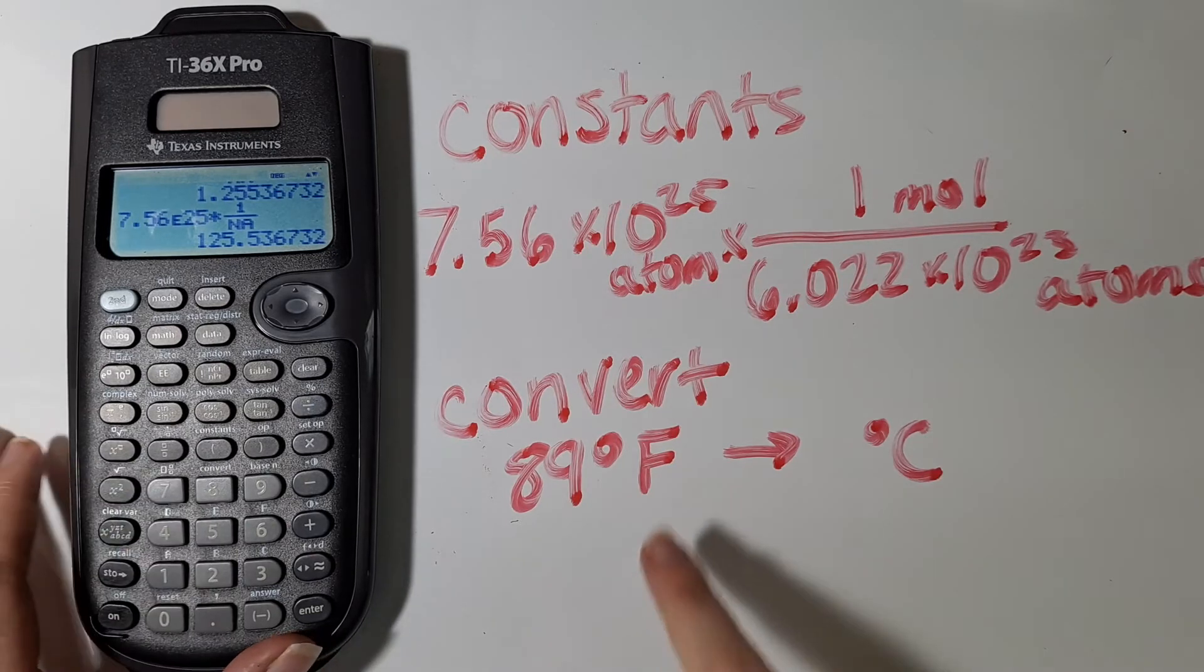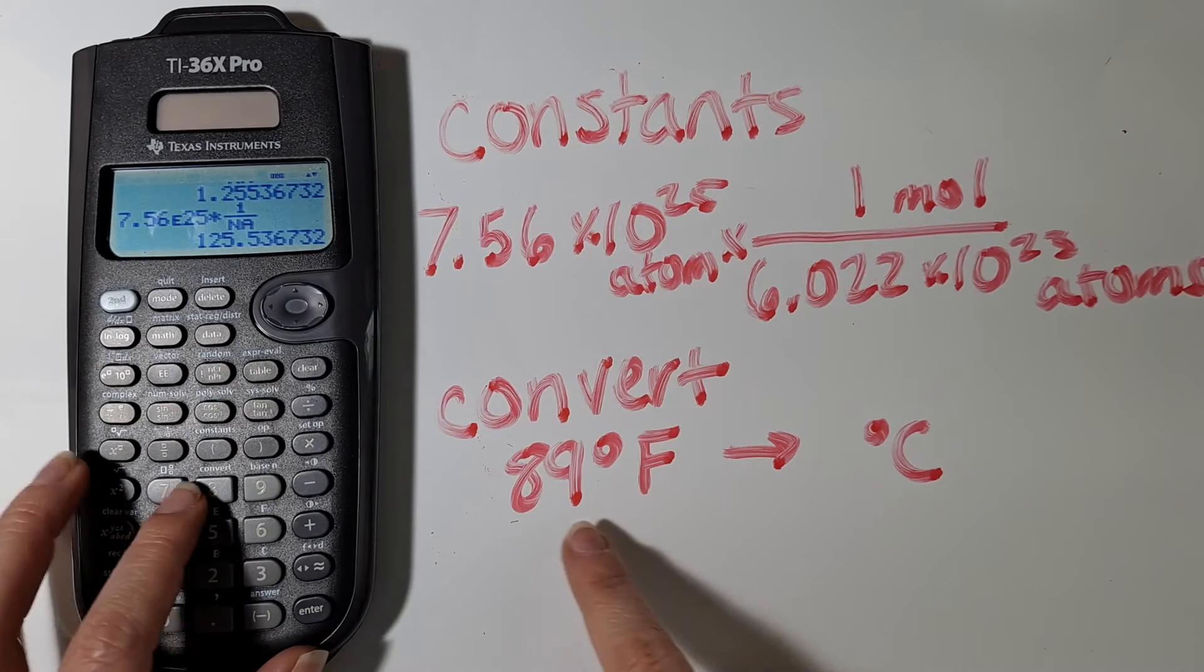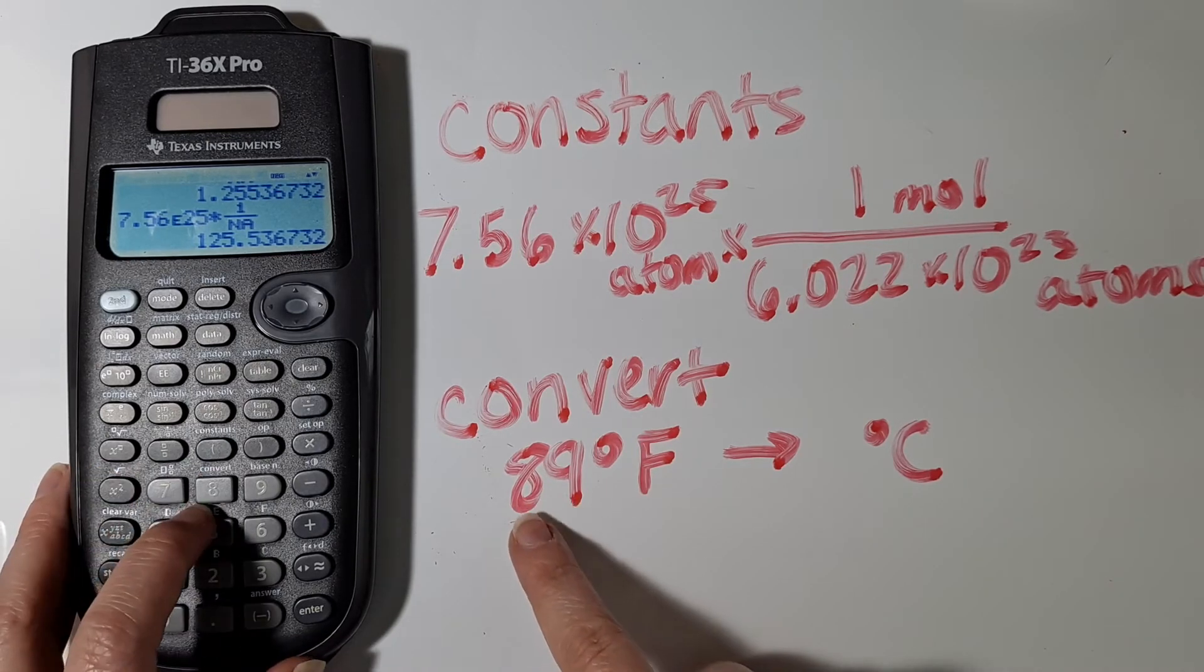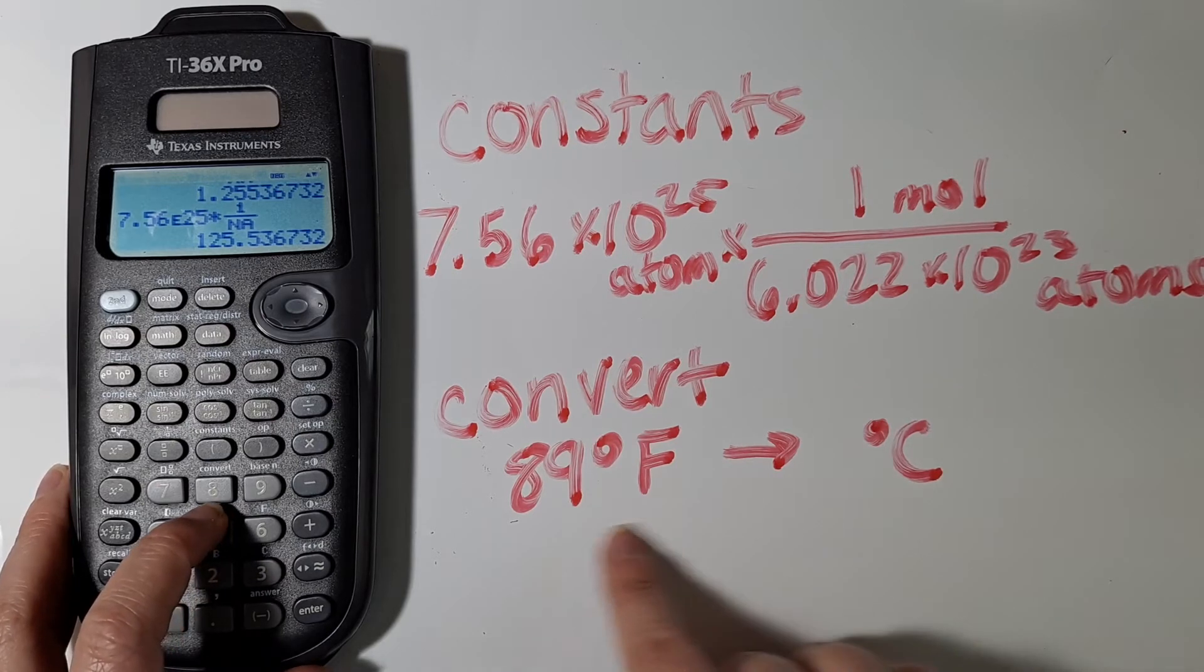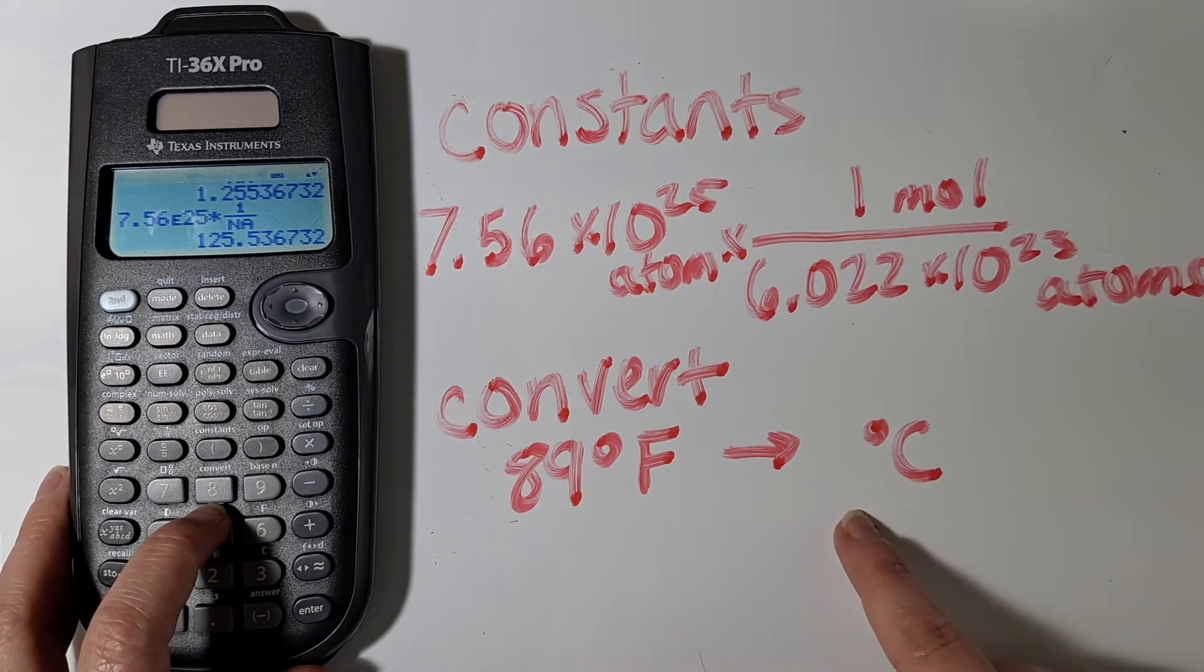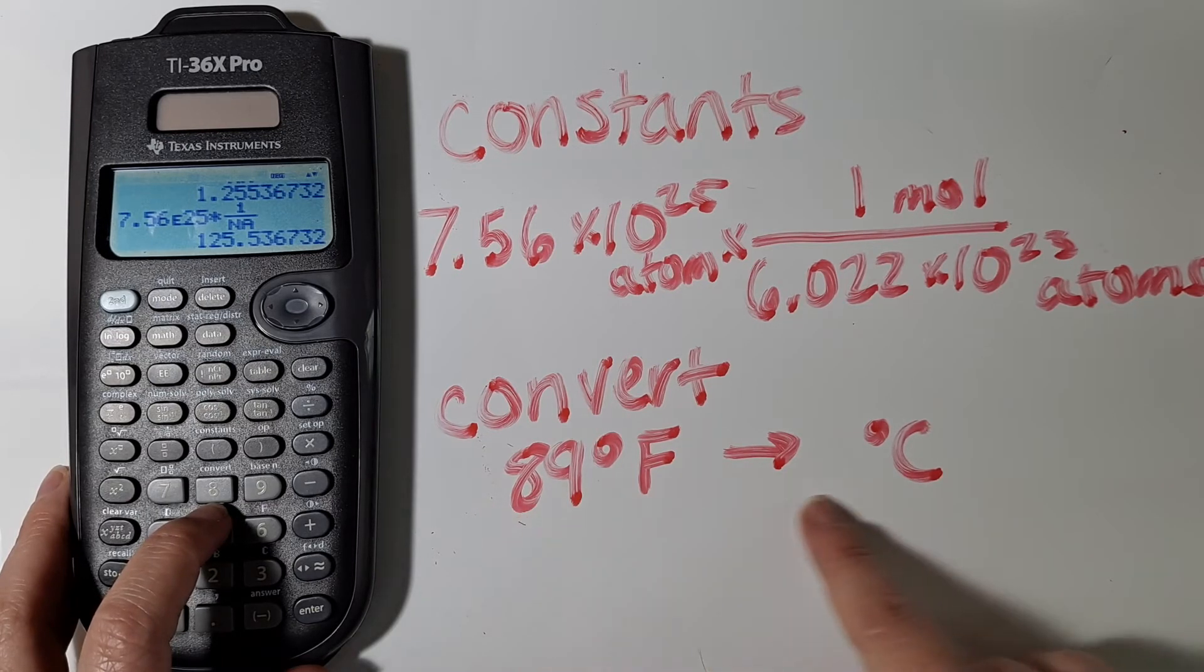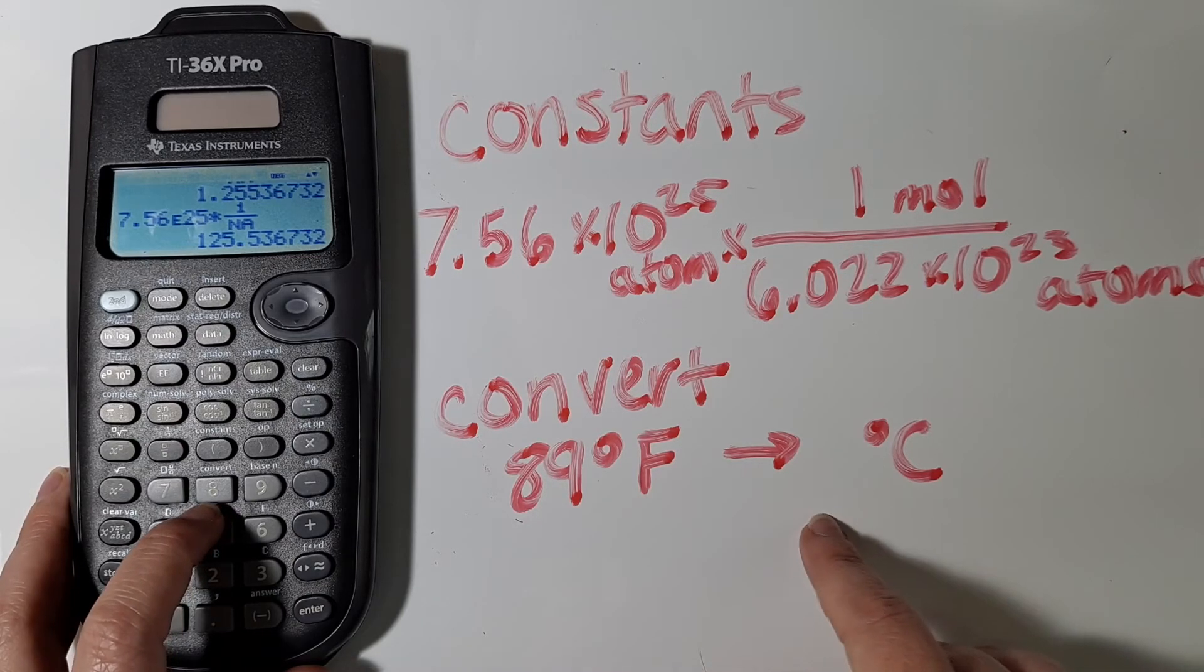Another thing that you can do is do some simple unit conversions. So let's say that I need to convert 89 degrees Fahrenheit to degrees Celsius. On an exam, you might need to show your work for how you did this. And so you'll probably need to look at a reference sheet or have the equation memorized for how to convert between the two.